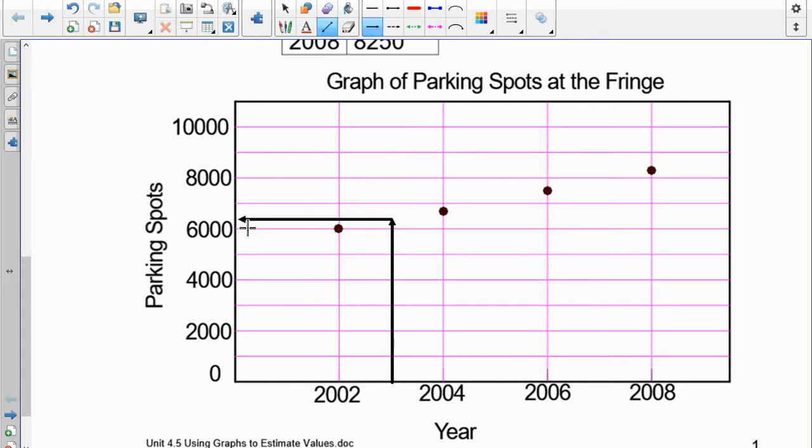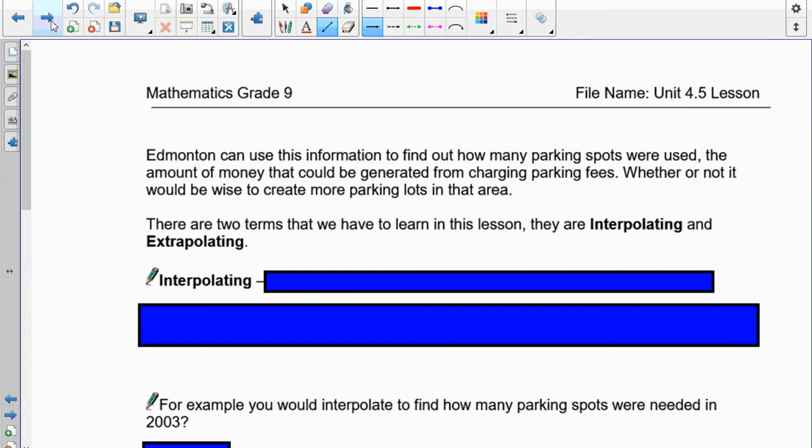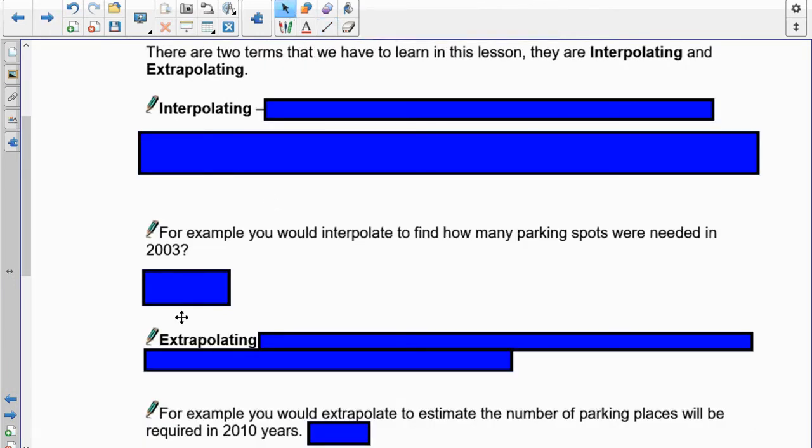And you could see that we have roughly somewhere in that neighborhood there. This is 7,000. This is 6,000. So we're somewhere around halfway between 6,000 and 7,000. And then I actually made the graph up so I can give you the exact number that's required. And that is 6,375.